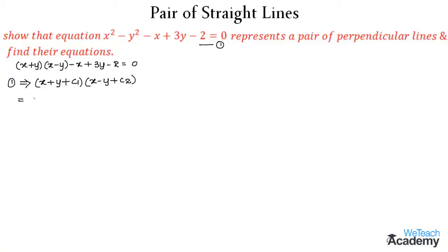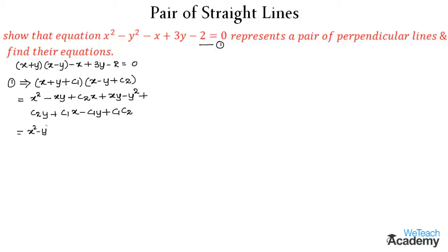Let us multiply both terms. We get x² - xy + c2·x + xy - y² + c2·y + c1·x - c1·y + c1·c2. Collecting like terms, this simplifies to x² - y² + (c2 + c1)x + (c2 - c1)y + c1·c2. Now let us compare the like terms of both equations.